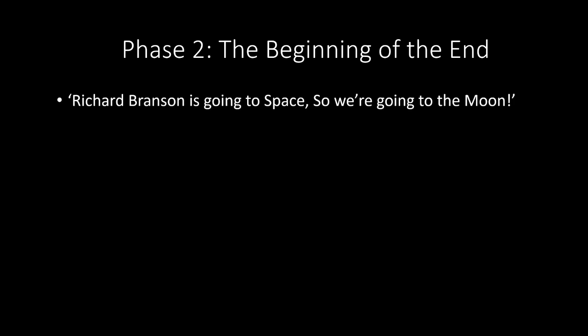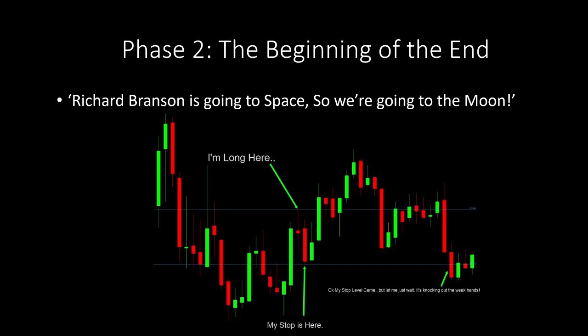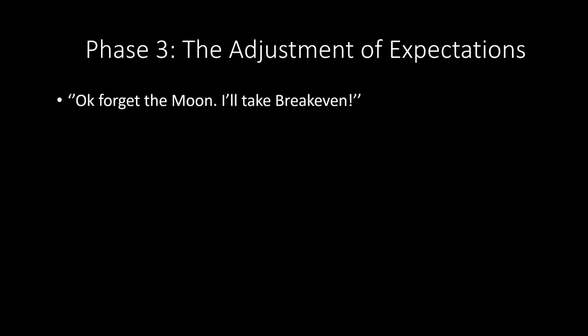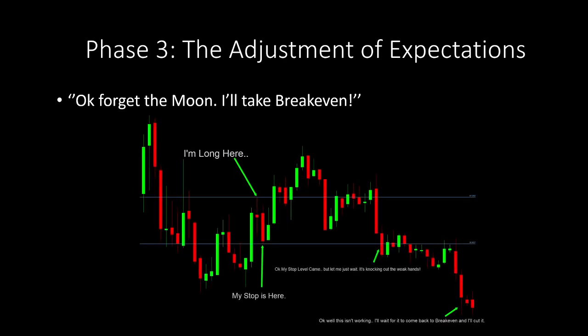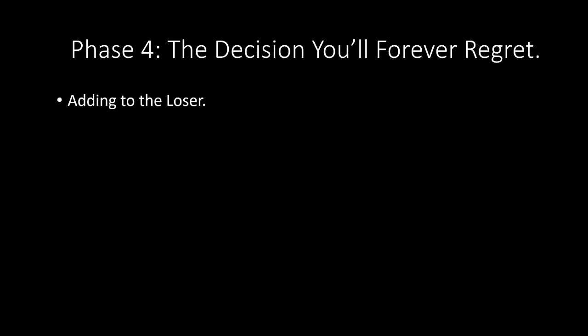Phase two — the beginning of the end: we entered long, our stop was set, the price came across our stop loss and we are still in. We're hoping this is just knocking out the weak hands and we're not going to respect the stop of the strategy we've tested many times — we're going to let this one play out. Phase three — the adjustment of expectations: forget the moon, we'll just take break even, let me just get out in one piece. It doesn't happen. It never comes back.